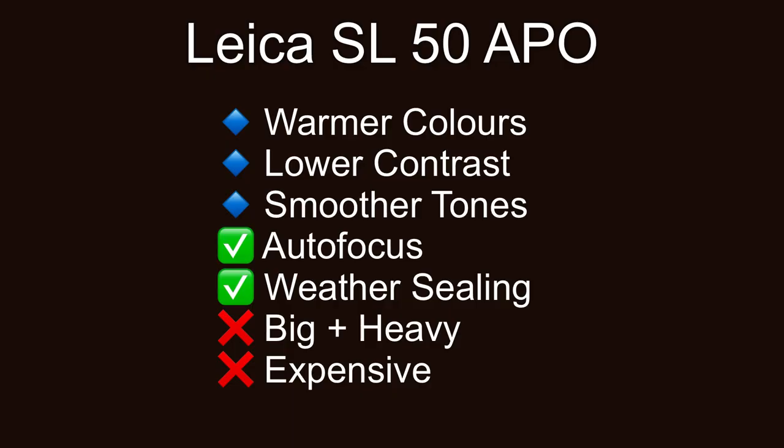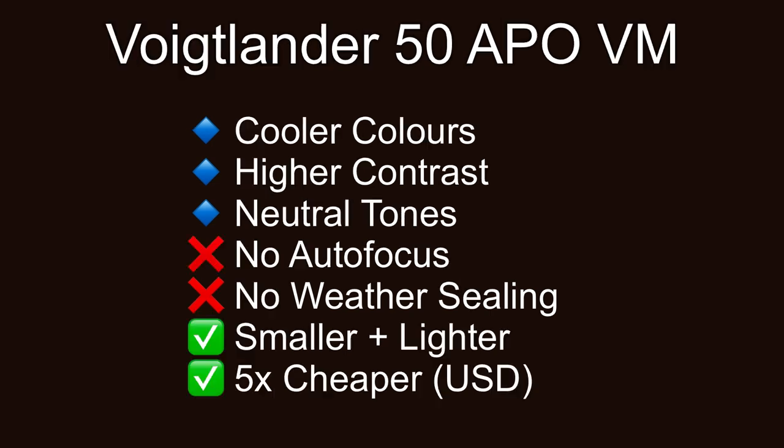So the big question — which was the best lens in the test? To my eyes, the Leica SL has warmer colours, probably more saturated, with lower contrast and smoother tones — more like a Leica R lens in terms of warm look. It's an autofocus lens and has weather sealing. However, these lenses are very big and heavy compared to the smaller Leica M lenses, and cost five times more than the Voigtlander. The Voigtlander on the other hand shows cooler colours, higher contrast and less smooth tones — neutral tones. It has rangefinder-coupled manual focus, no autofocus and no weather sealing, same as all other Leica M-mount lenses.